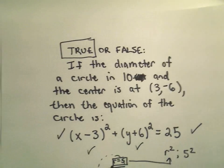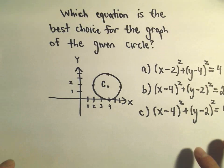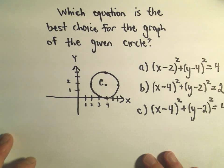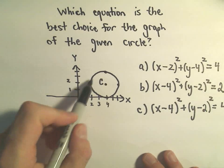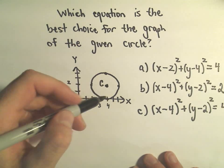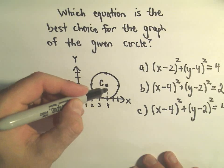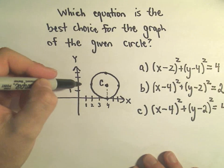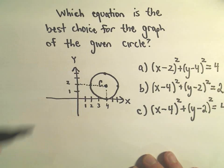So maybe one other here, just using this formula. We want to know which equation is the best choice for the graph of the given circle. So I've tried to make a little circle here. Suppose it's centered here. Let's assume the center here is at the x coordinate of positive 4 and the y coordinate of positive 2.